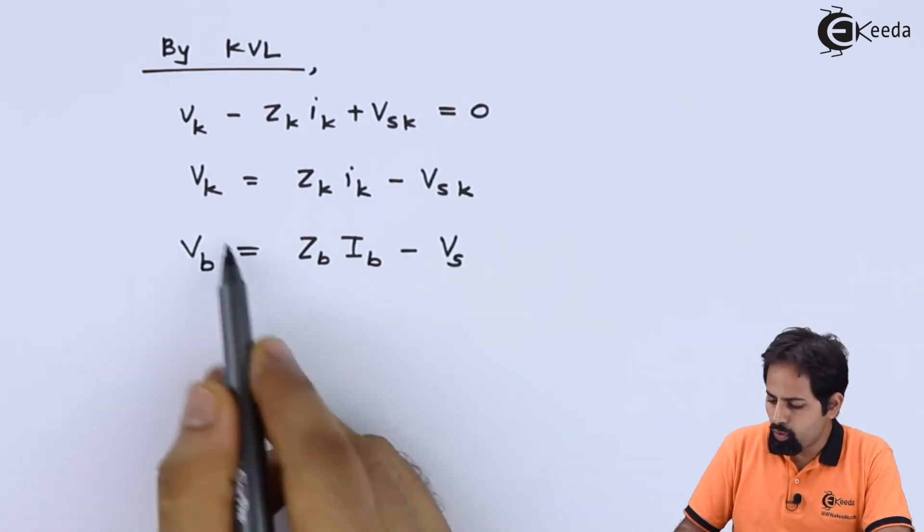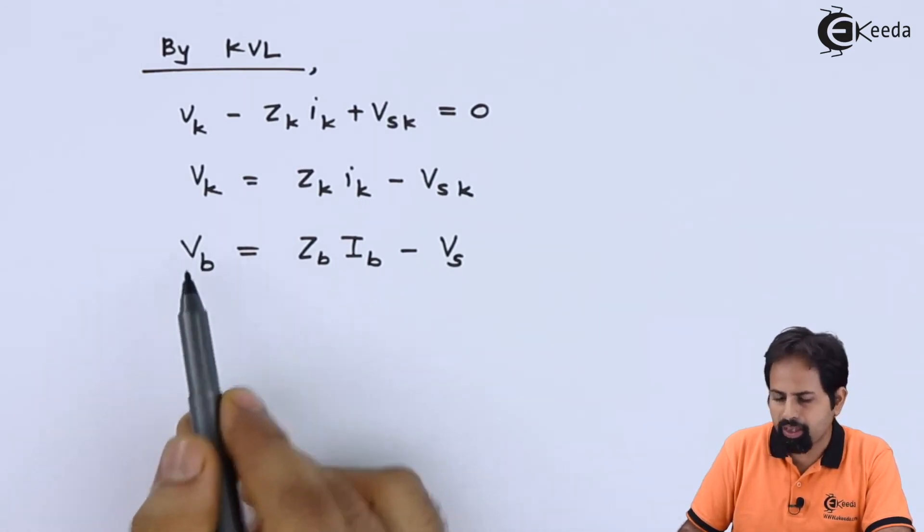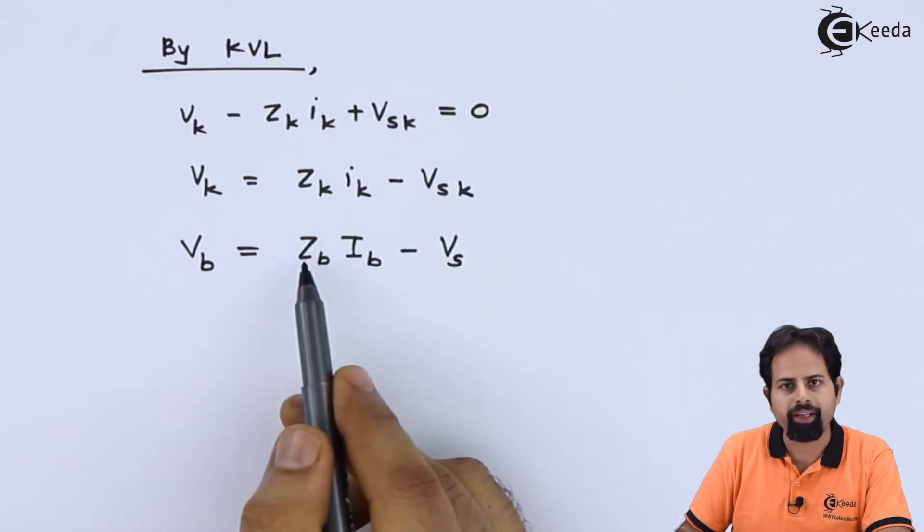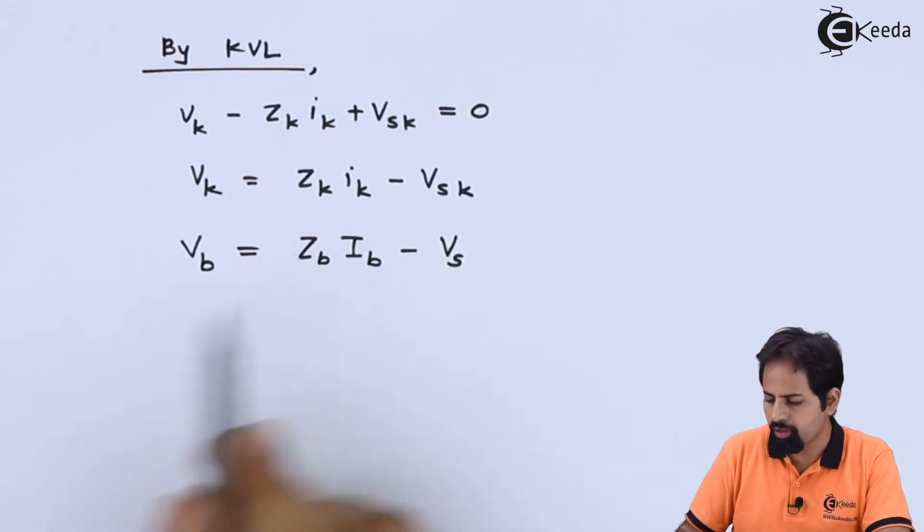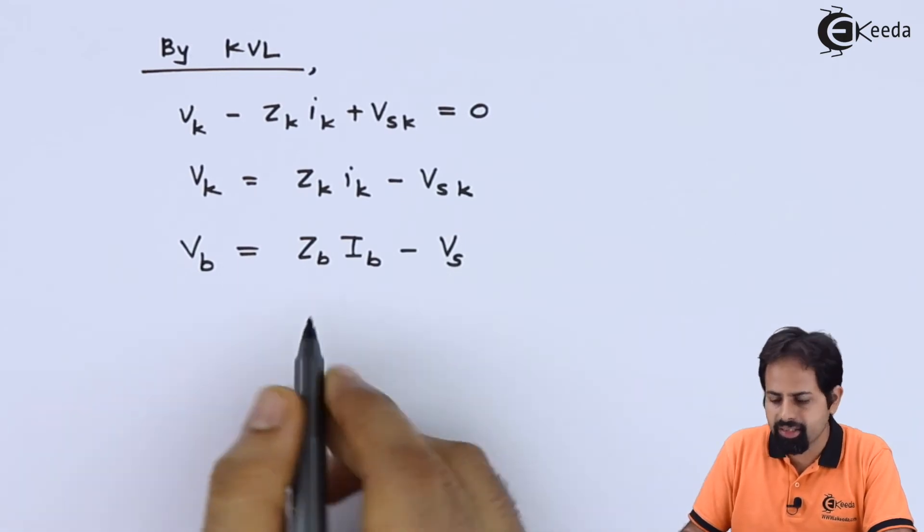Now we should know what is this VB. VB is nothing but the branch voltage and ZB is the matrix for branch impedance which obviously how to get will see in numericals.